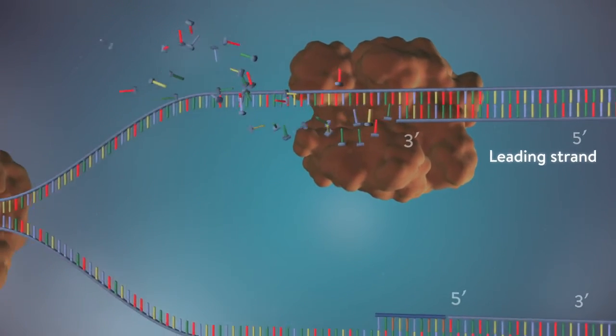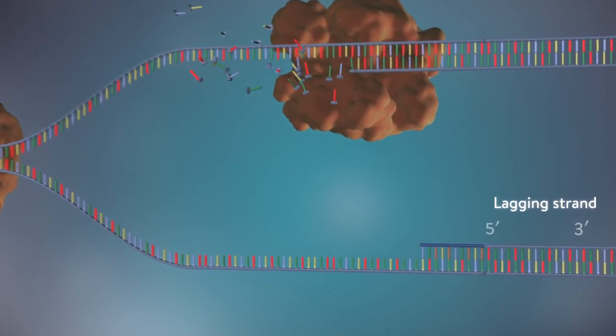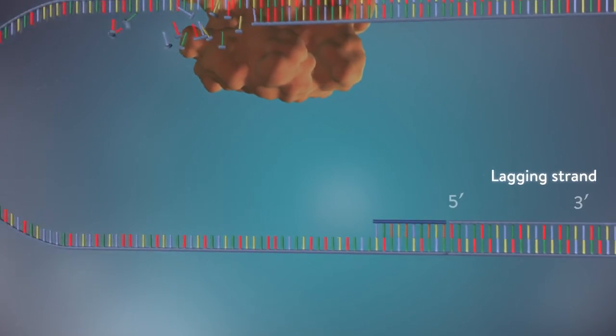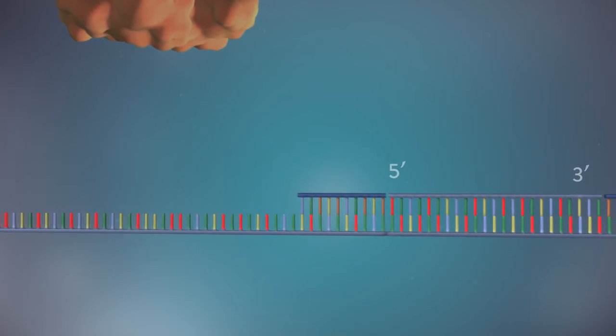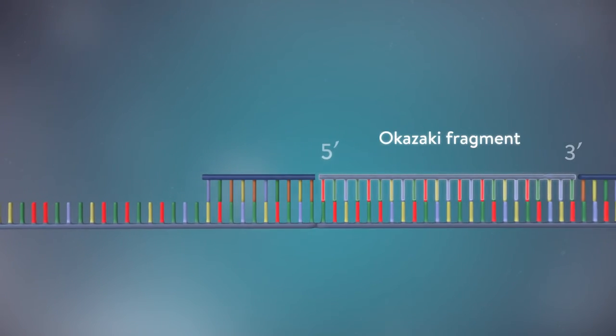The other strand, the lagging strand, cannot be made in this continuous way because it runs in the opposite direction. The DNA polymerase can therefore only make this strand in a series of small chunks called Okazaki fragments.